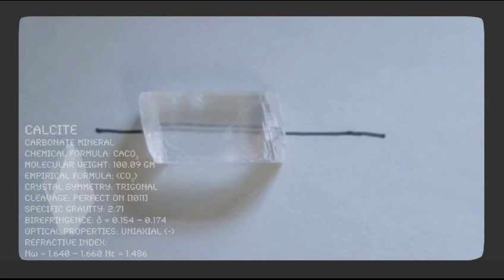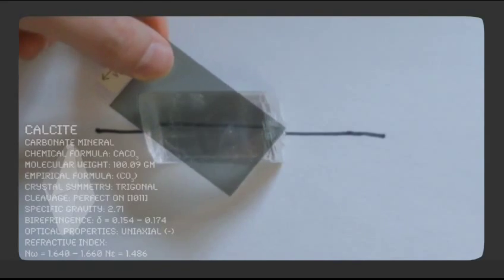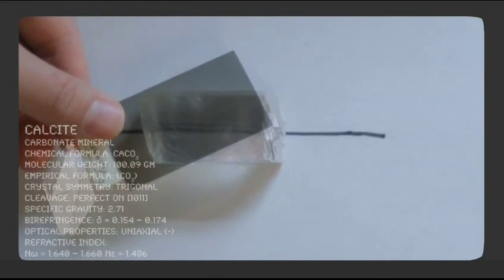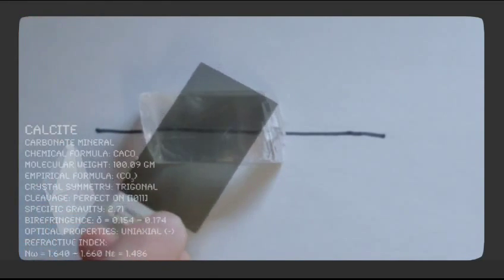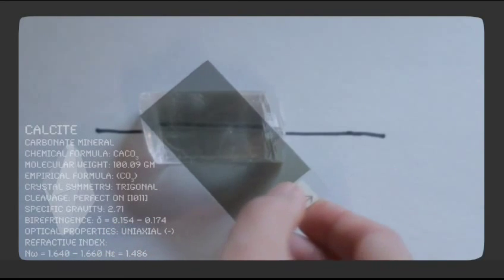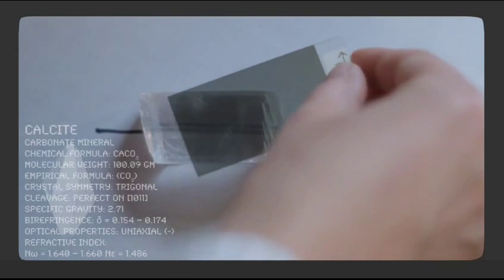When a polarized piece of film is placed on top, we can filter which rays pass through. If the polarized film is rotated 90 degrees, we see only one of the two rays at a time.